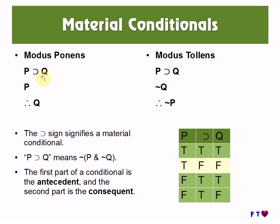In modus ponens, we have: if P, then Q. We affirm P, and since this tells us that if P is true then Q is true, we can infer that Q is true. In modus tollens, we again have the premise: if P, then Q. But this time we are denying Q, and we are inferring not P.